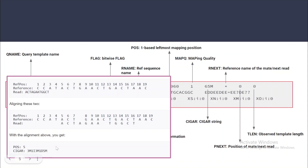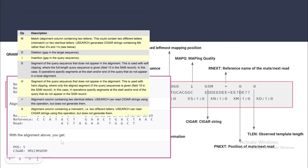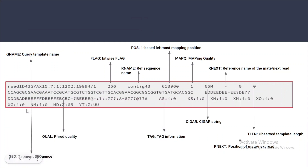Each letter in the CIGAR string has a different meaning: M represents a match, D is for deletion, and I is for insertion. There are other alphabets as well, each with its own description.